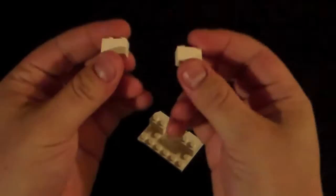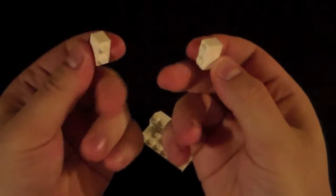Then you're going to take your two 1x2 bricks, place them there on the sides. And your 1x4 brick, place it there.